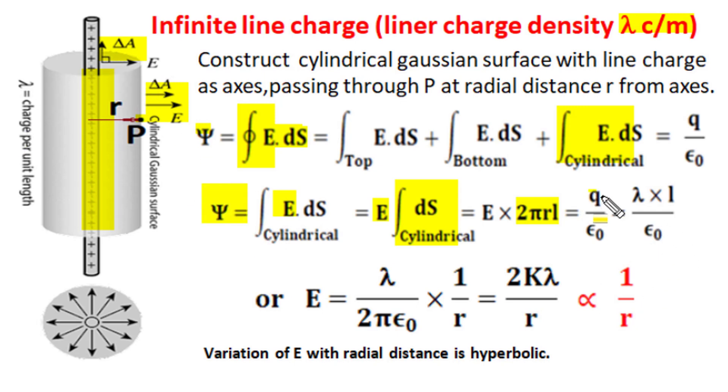As per Gauss law the total flux coming from any closed surface is equal to total enclosed charge divided by permittivity of media. If this infinite line charge got linear charge density lambda coulomb per unit length then for l length total enclosed charge will become lambda l.